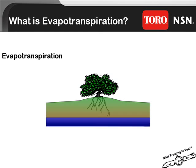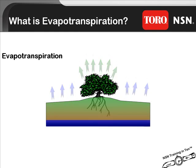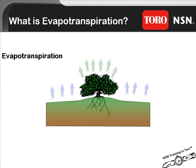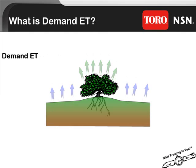Simply put, evapotranspiration is a measurement of water loss in the soil reservoir due to the combination of evaporation from the soil and transpiration through the tissue of the plant — in our case, that plant is turf grass. Demand ET is a factor that refers to the amount of total loss that you would like to replace into the soil reservoir through the use of your irrigation system.